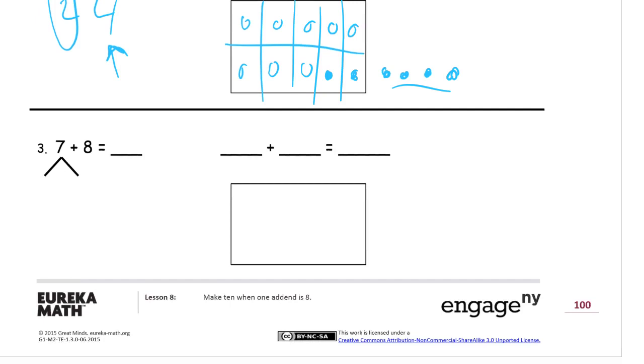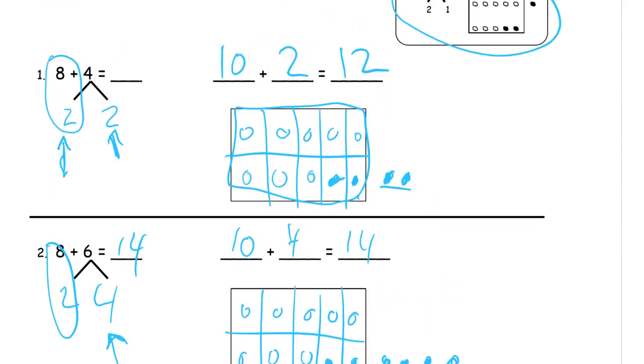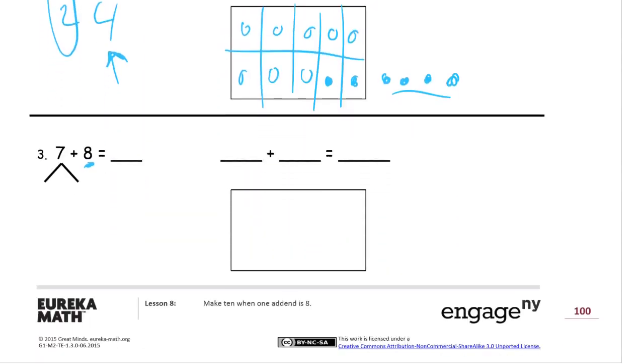And here's our last one here. 7. Now 7 needs... oh, no. This time we have... we're still working with 8, right? We usually want to break up the smaller number of the 2. And it's not always the first number, right? It's not always the first number. We're not always breaking up the second, the number on the right, the right add-in.